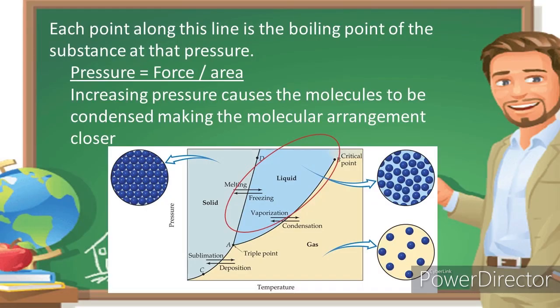Each point along this line is the boiling point of the substance at that pressure. Increasing pressure causes the molecules to be condensed, making the molecular arrangement closer.